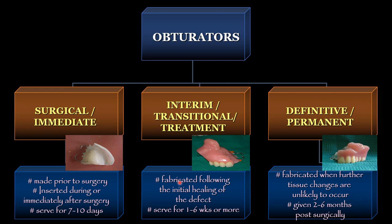Regarding materials: the surgical or immediate obturator is mainly formed of clear acrylic — self-cure or heat-cure. The interim obturator is fabricated of heat-cure resins. The definitive or permanent obturator is fabricated on a metal framework, like any cast partial denture with a proper design, followed by acrylization with a bulb depending on the extension of the defect.